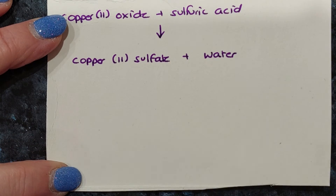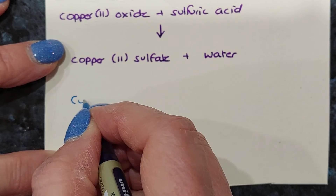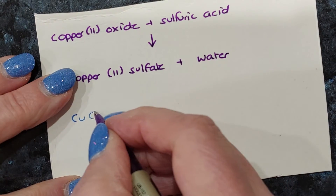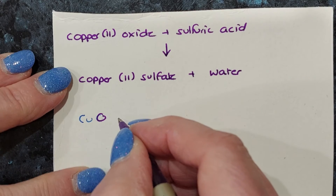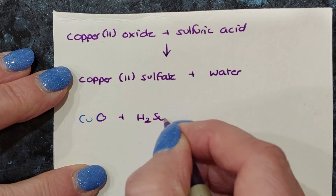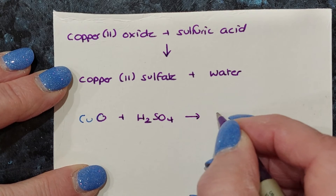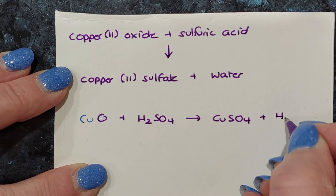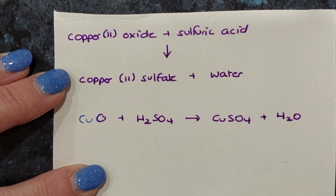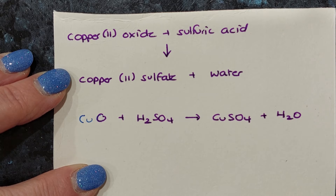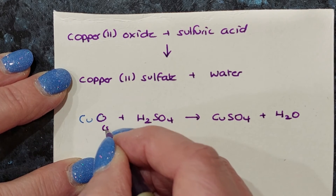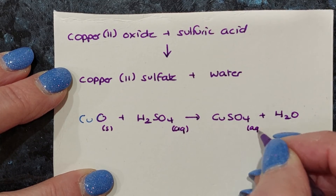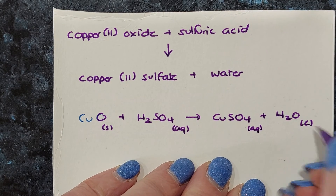Let's write a balanced equation for this reaction. Copper(II) oxide is CuO, and sulfuric acid is H₂SO₄, and water of course is H₂O. What we see is this equation is already balanced, so all we need to do is add some states. Copper oxide is a solid; all acids are always aqueous. The copper sulfate is the blue solution, and water of course is a liquid.